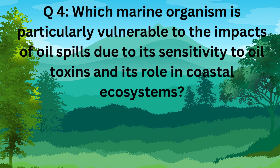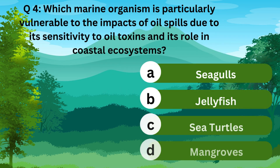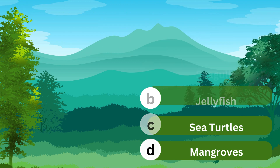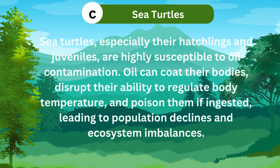Question 4. Which marine organism is particularly vulnerable to the impacts of oil spills due to its sensitivity to oil toxins and its role in coastal ecosystems? A. Seagulls. B. Jellyfish. C. Sea turtles. D. Mangroves. The correct answer is C. Sea turtles.